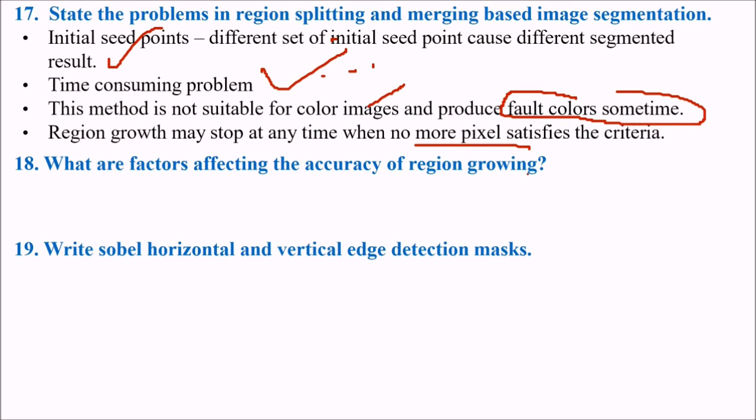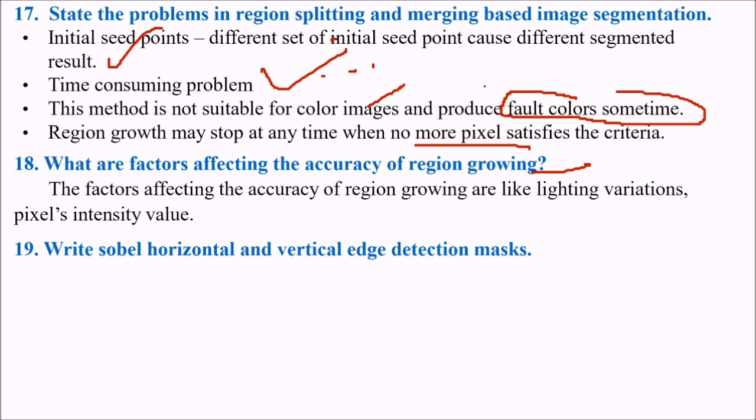What are the factors affecting the accuracy of region growing? The factors which affect the accuracy of region growing are lighting variations and pixels intensity value.